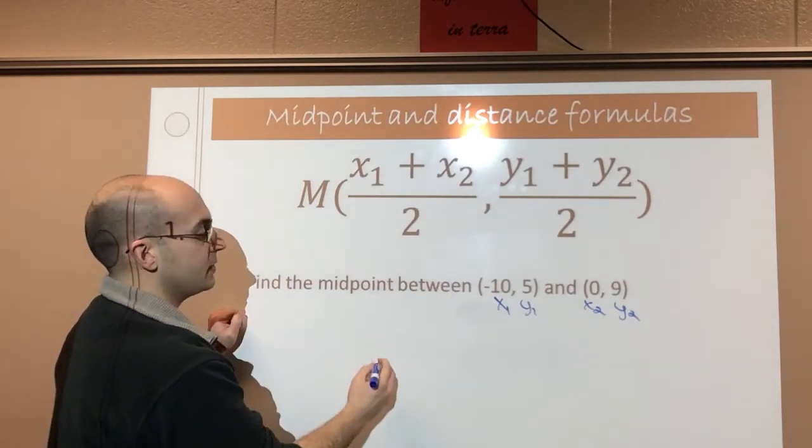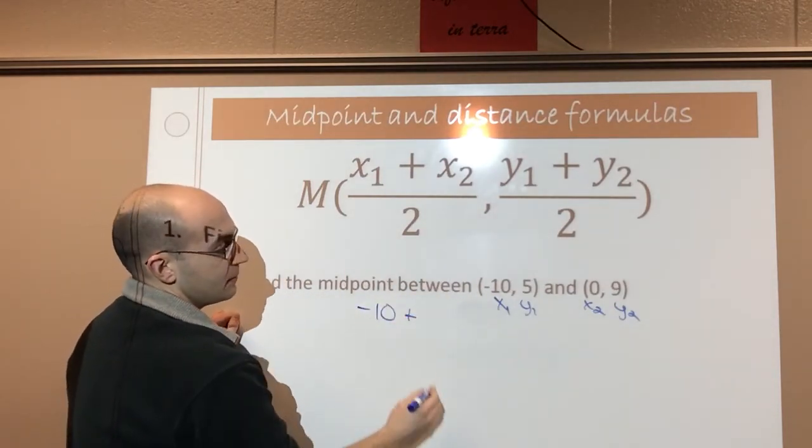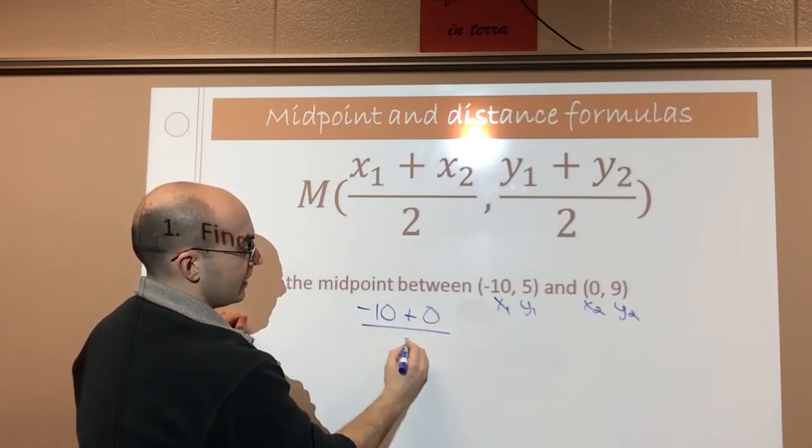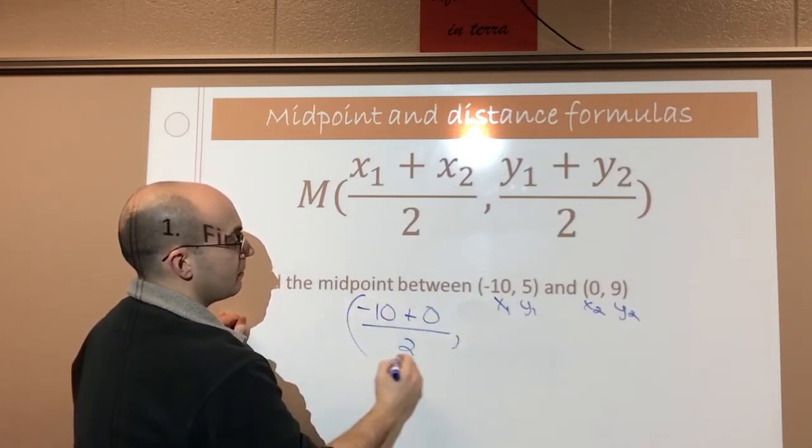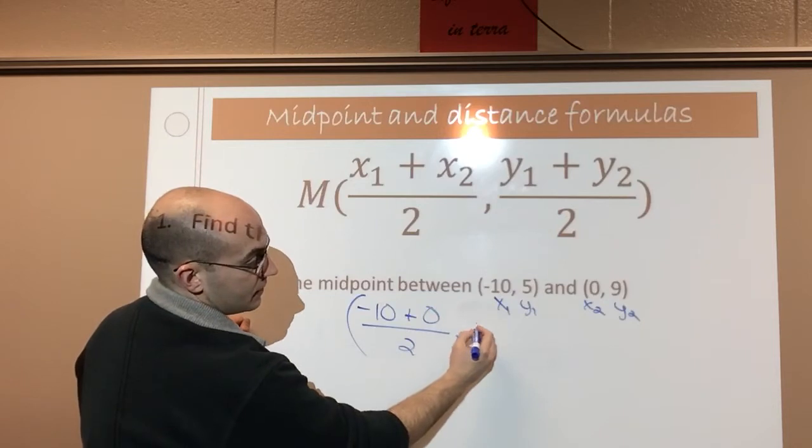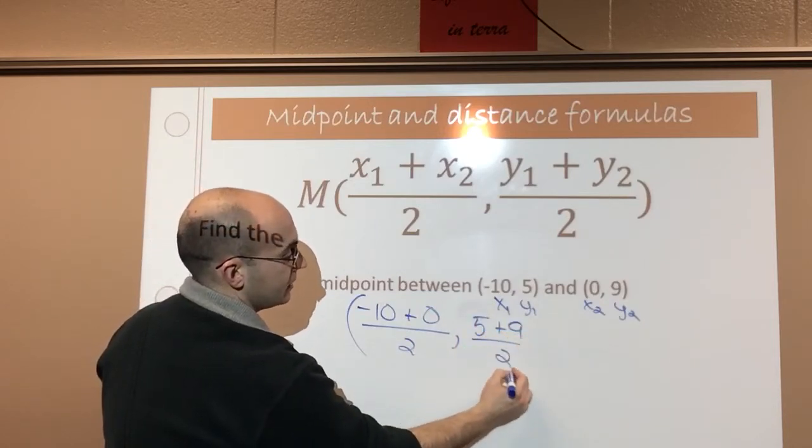So my first x value is going to be negative 10, and my second x value is going to be 0, and I'm going to divide that by 2. Then my y values is 5 plus 9 divided by 2.